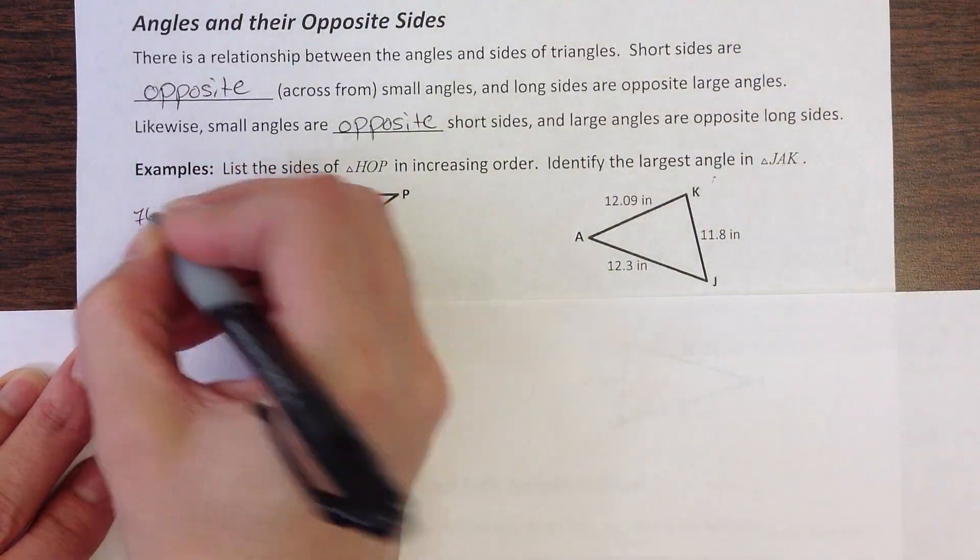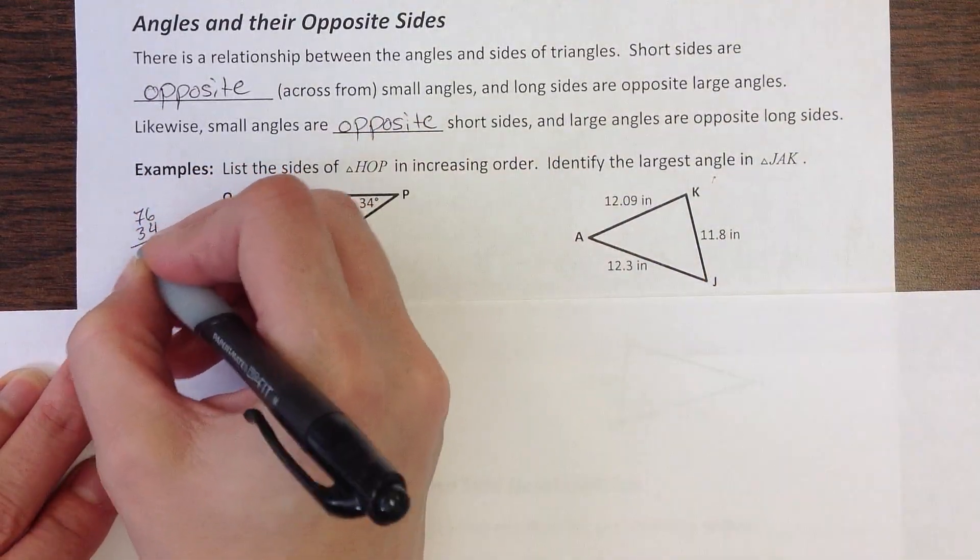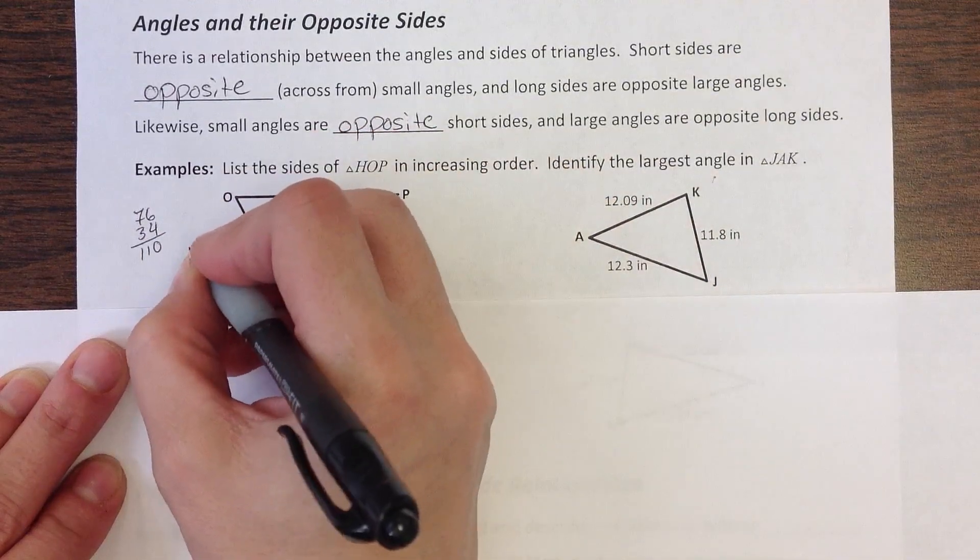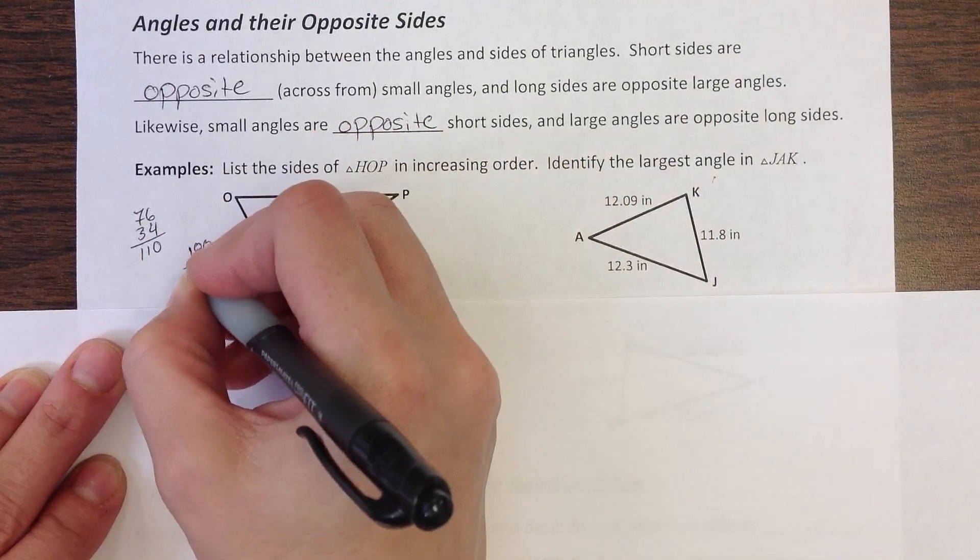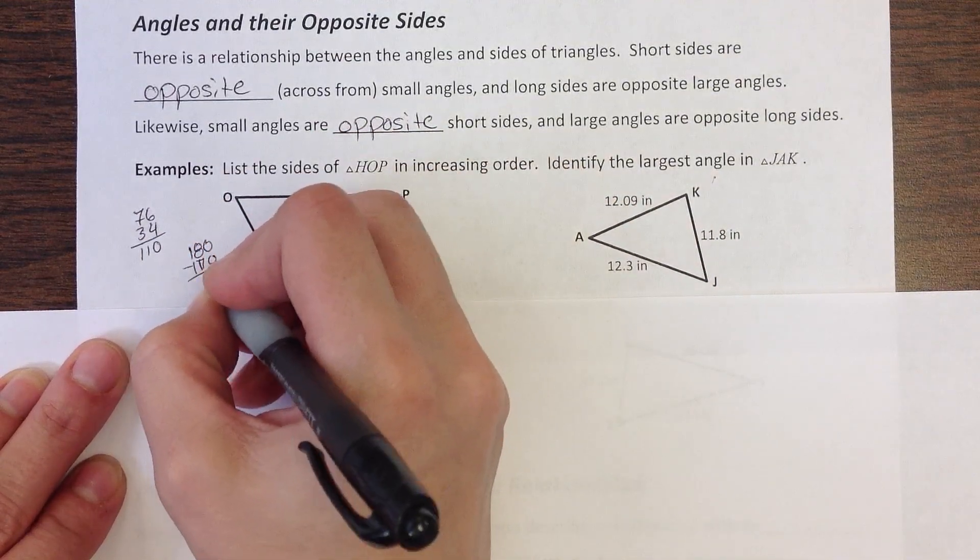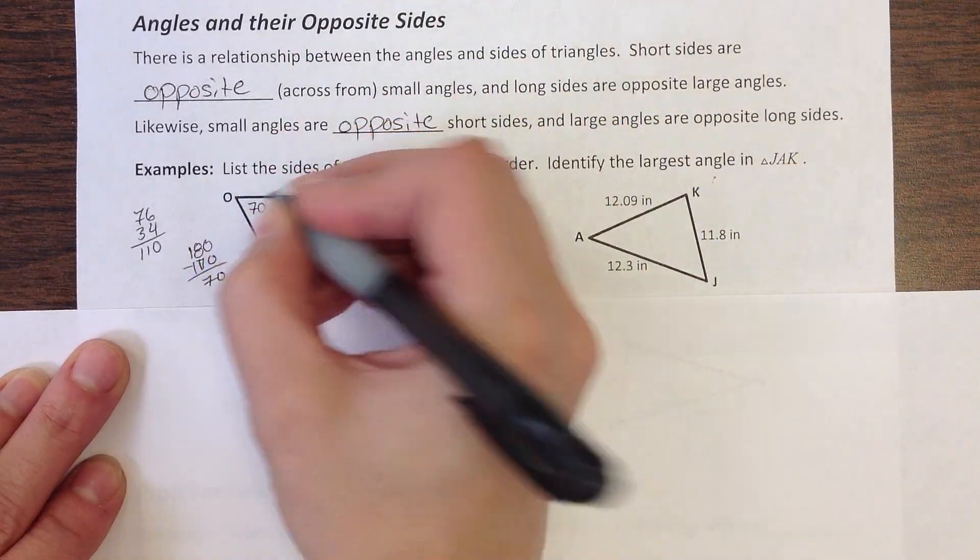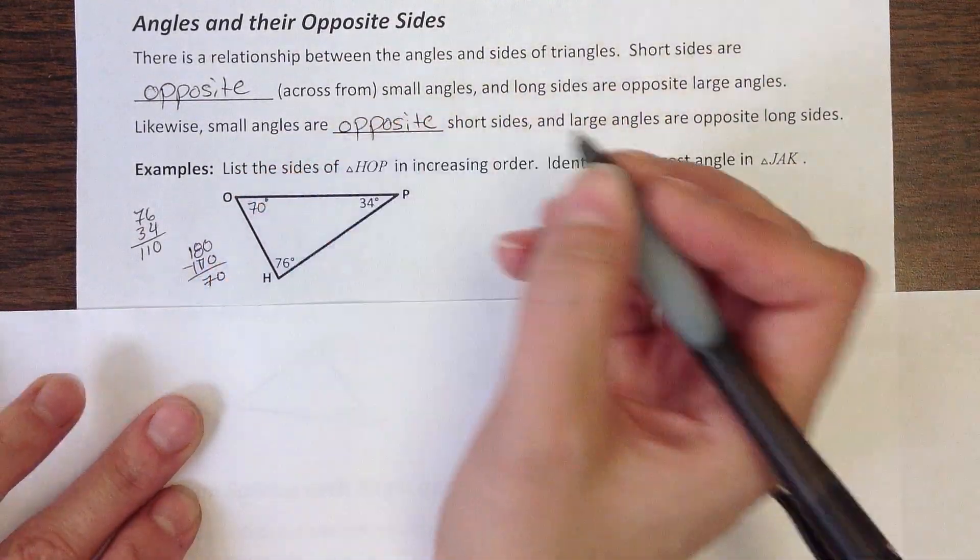So I'm going to go ahead and add the two that I have. And then I'm going to subtract that from 180 to find out what my last angle was. I was jumping to my answer there. Okay, so if my last angle there is 70.